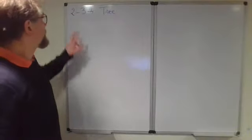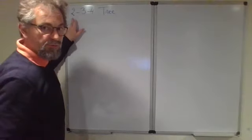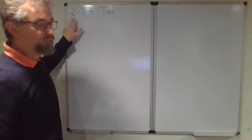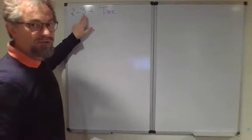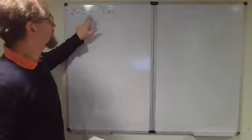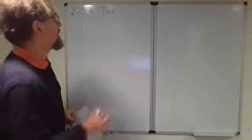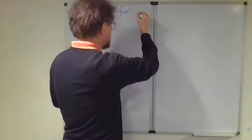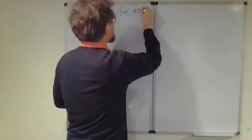Two-three-four trees are an introduction to B-trees. A two-three-four tree has two nodes, nodes that are binary that have two children. Three nodes have three children and four nodes have four children. I will introduce this two-three-four tree with a numerical example.